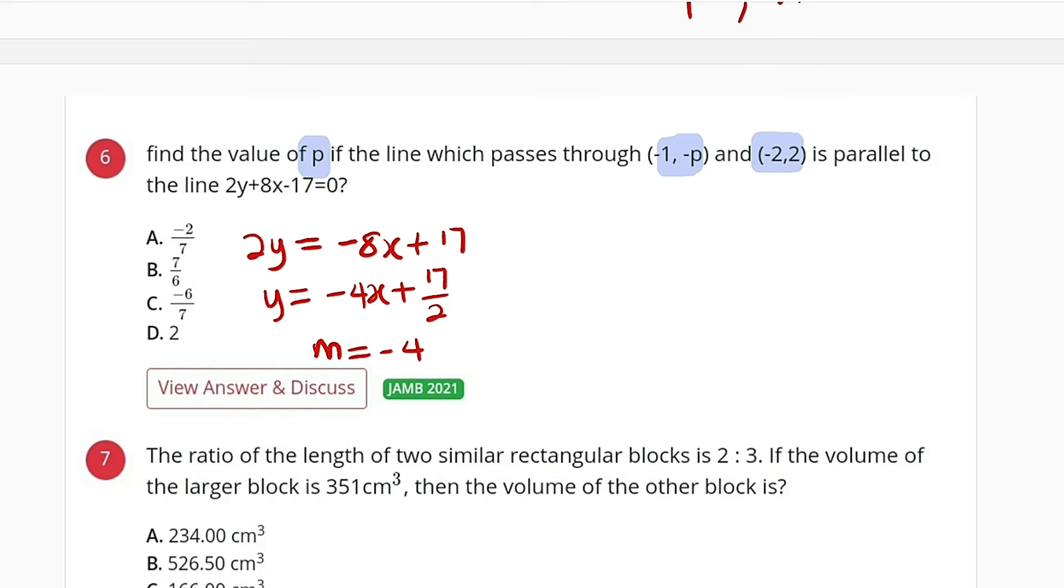If m is equal to negative 4, remember that y2 minus y1 divided by x2 minus x1, which is the slope,